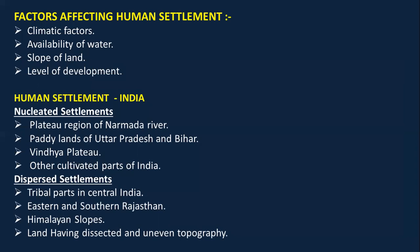Next is Chapter 7 — Factors Affecting Human Settlement. Factors that affect where we choose to live are climatic factors (we cannot live in extreme climatic conditions), availability of water, slope of land, and the level of development. If you are used to living in a metropolitan city with full facilities, moving to a remote village would be very difficult.